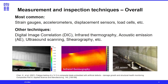Most common measurement techniques include using strain gauges, accelerometers, displacement sensors, load cells, etc. Depending on the purpose of the blade testing, other techniques can also be used, such as digital image correlation, infrared thermography, acoustic emission, ultrasound scanning, shearography, etc. In this lecture, we will talk more about digital image correlation and infrared thermography.